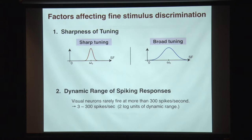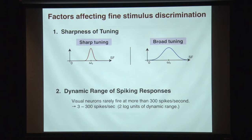It's better to have sharp tuning where we can use the slope section, where a small change in the stimulus parameter will cause a large change in the response. The other factor we dealt with is the dynamic range of spike responses. The spike response is stochastic, and it's very limited in range — typical neurons can't really fire more than 300 spikes per second. It's basically two log units, from about 3 spikes to 300 spikes per second.